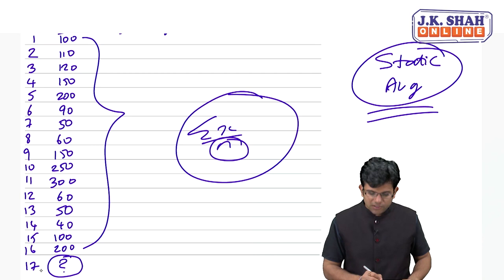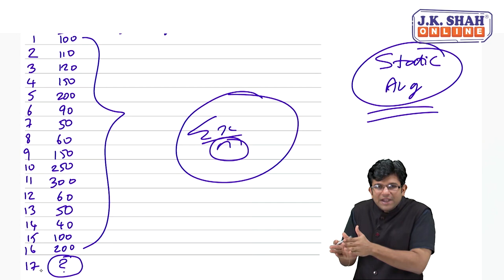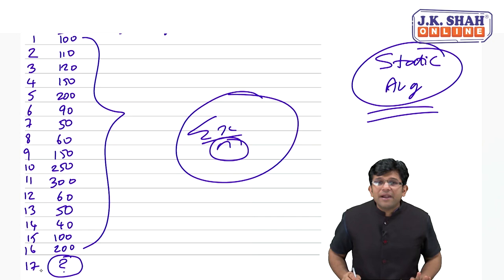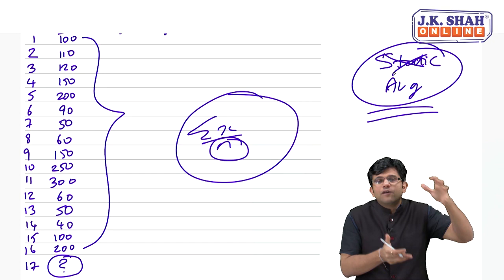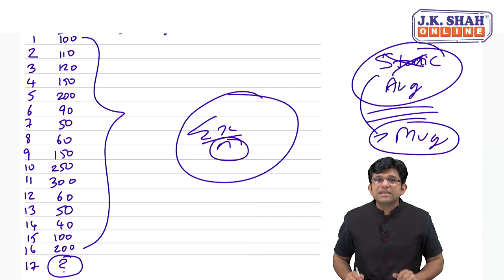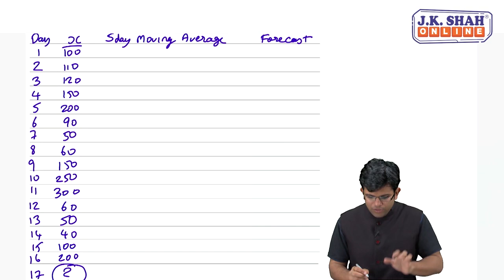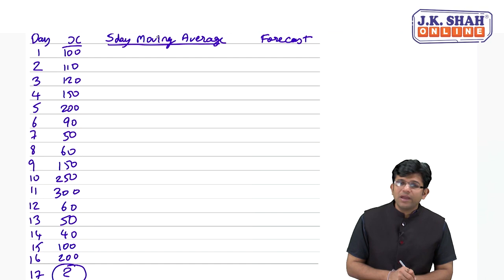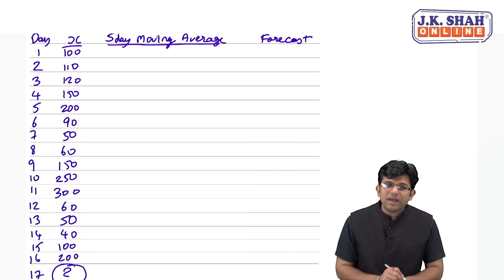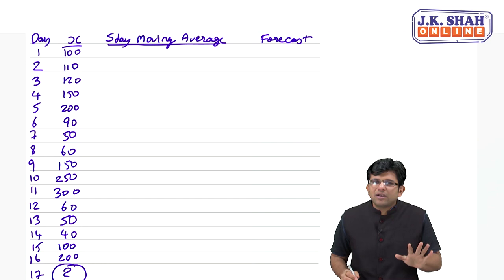We can easily calculate the static average for the past 16 observations and find out what is expected for day 17. Now that you know what a static average is, let us move one step ahead and understand what a moving average is. Static means one place, one shot, one set of data — a simple average. Now we are moving to moving averages. Once you understand what a moving average is, I can easily teach you what an exponential moving average is.